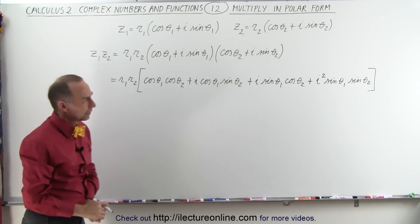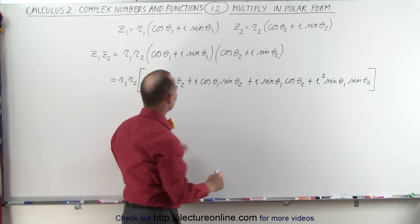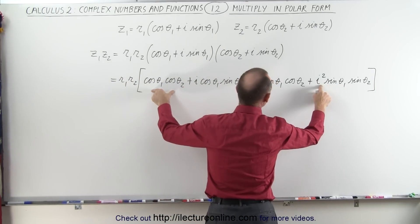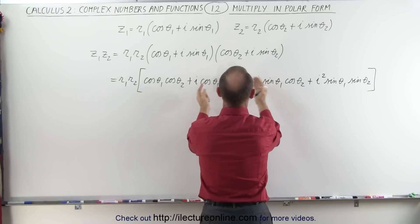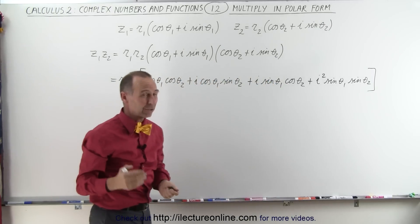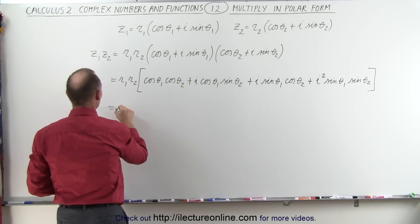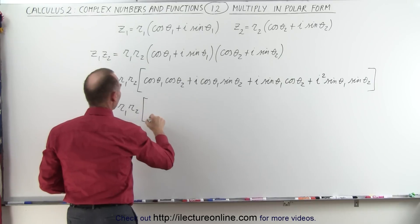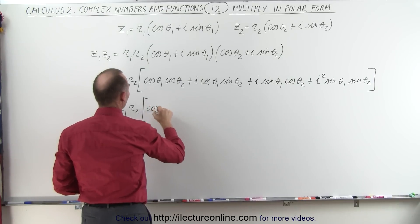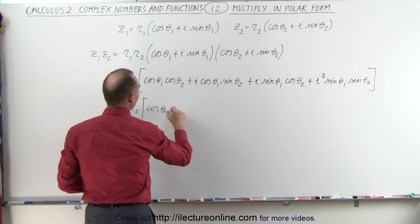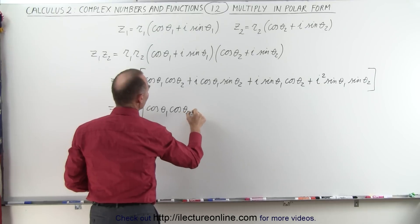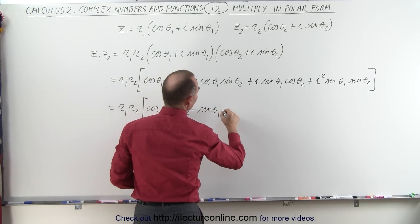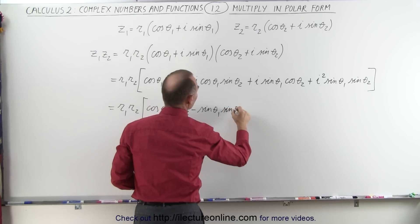So now we're going to combine the two real parts — since i squared becomes negative one — and factor out an i for the imaginary parts. Let's see what that looks like. So r1 times r2 times: here we have the cosine of theta1 times the cosine of theta2, minus the sine of theta1 times the sine of theta2.